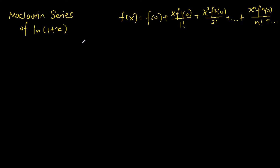The Maclaurin series formula tells us that a function can be expressed as an infinite series called the Maclaurin series, in which each term is expressed as x to the power of n times f to the power of n evaluated at 0, over n factorial, where f to the power of n of 0 means differentiating the function n times.